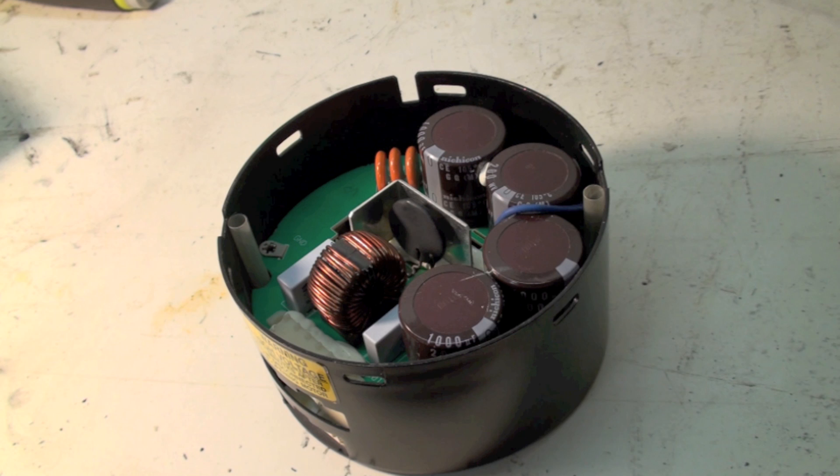One of the things that happens to these end bells that produce a variable speed is there's a part in these that fails, and it's a very simple part and it looks like it's pretty easy to replace.